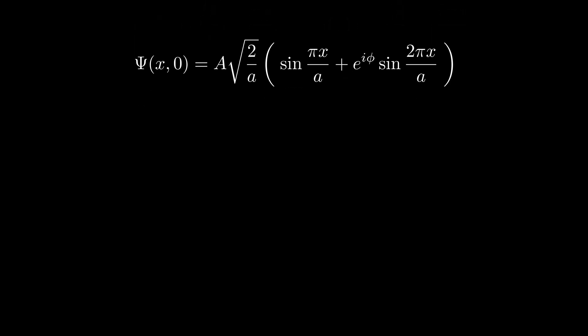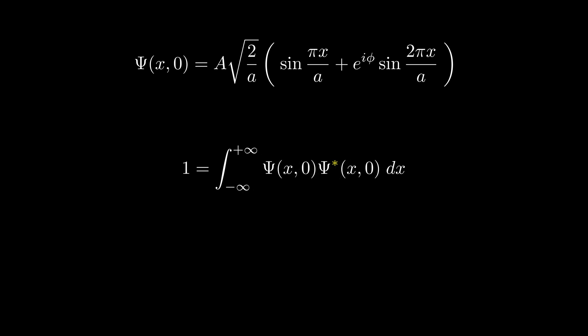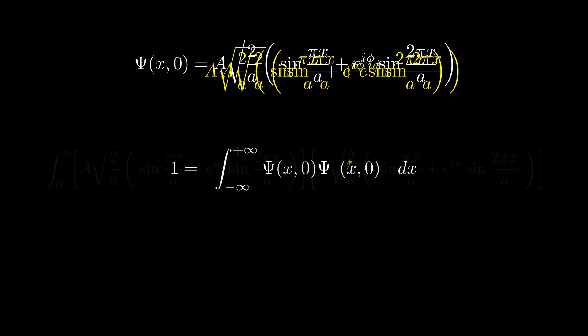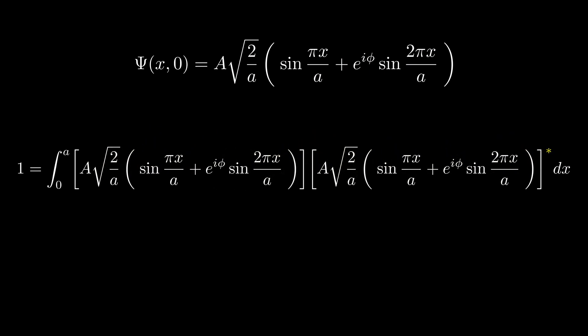Now that we have our initial wave function expressed in terms of ψ₁ and ψ₂, the next step is to determine the value of capital A. To do that, we use the normalization condition: the total probability of finding the particle anywhere in space must be 1, meaning the integral of the probability density over all space must equal 1. Since probability density is given by the wave function multiplied by its complex conjugate, we rewrite this in a more useful form. Let's apply the complex conjugate to our initial wave function — the only effect is changing the sign of i in the phase shift term.